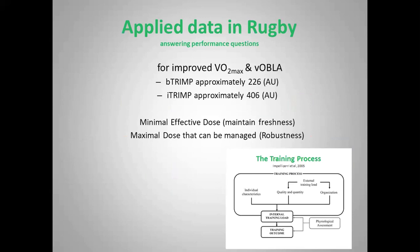From the rugby data, we could calculate the turn point — we knew how much of Banister's TRIMP would be required for an improvement in VO2max or velocity at four millimoles. This raises questions about the philosophical underpinnings of performance systems. There's been talk of using a minimal effective dose — where a majority of that minimal effective dose can come from a game, and then you top it up with technical training. This helps maintain freshness, especially when playing frequently.